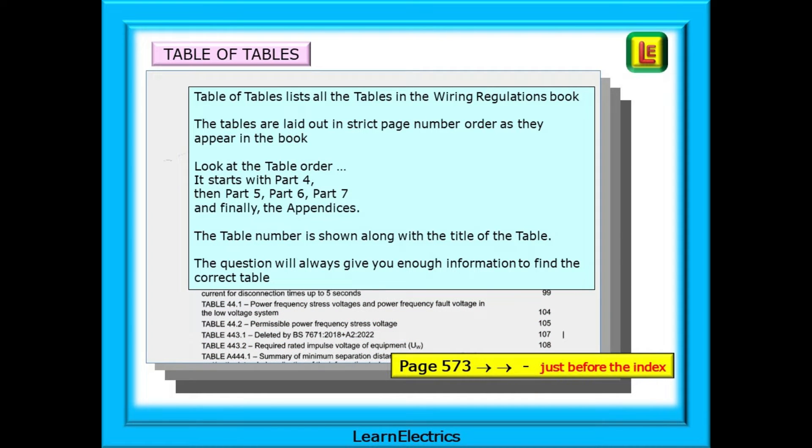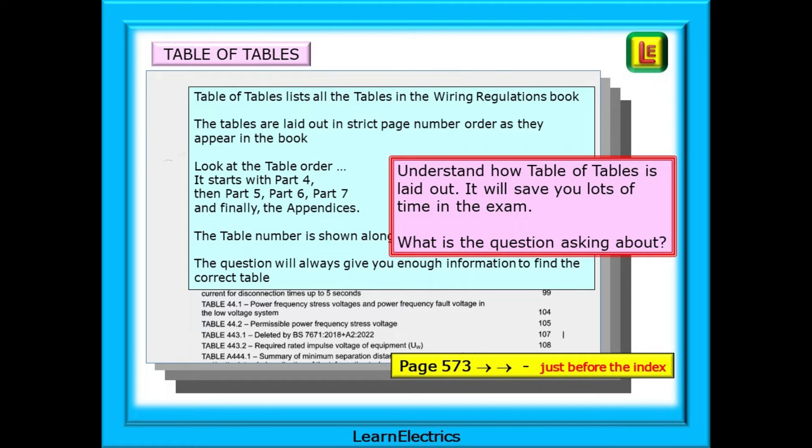Table of tables lists all the tables that appear in the Wiring Regulations book. The tables are laid out in strict page number order as they actually appear in the book. Look at the table order in table of tables. It starts with part 4, then part 5, part 6, part 7 and finally the appendices. The table number is shown along with the title of the table and this is the key to finding answers quickly. The question will always give you enough information to find the correct table. You must understand how table of tables is laid out. It will save you lots of time in the exam.